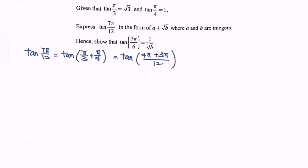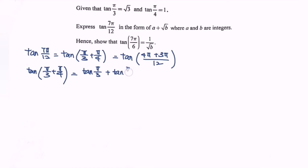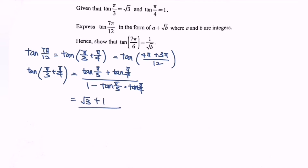Kindly make use of the compound angle formula. So we have tangent(π/3 + π/4), which is equal to [tan(π/3) + tan(π/4)] / [1 − tan(π/3)·tan(π/4)]. Substituting the values, we have (√3 + 1) / (1 − √3·1). So tangent(7π/12) = (√3 + 1) / (1 − √3).